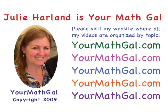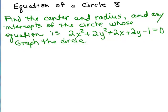Hi, this is Julie Harland and I'm your math gal. Please visit my website at yourmathgal.com where you can search for any of my videos organized by topic. This is part eight of equation of a circle and we're going to find the center, radius, and any intercepts of the circle whose equation is 2x squared plus 2y squared plus 2x plus 2y minus 1 equals 0, and then graph the circle.